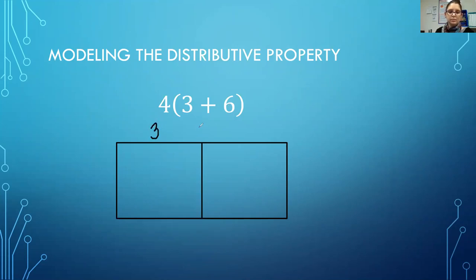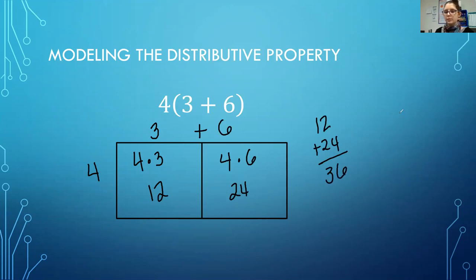So we have 3 plus 6 and then along the side what we're multiplying. So we have 4 times 3 plus 4 times 6. Four times three is twelve, four times six is twenty-four. And then to get our final answer we would add twelve plus twenty-four and we get thirty-six.